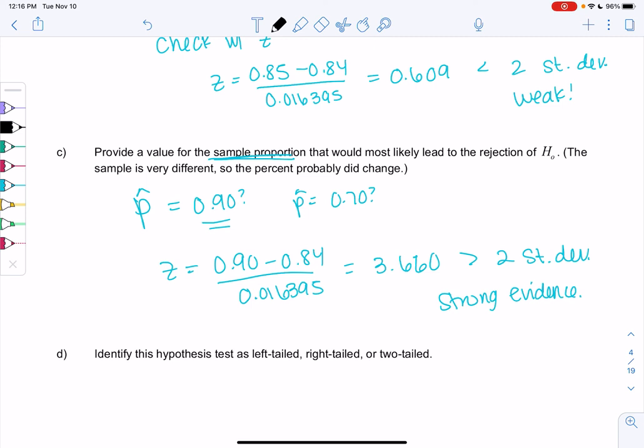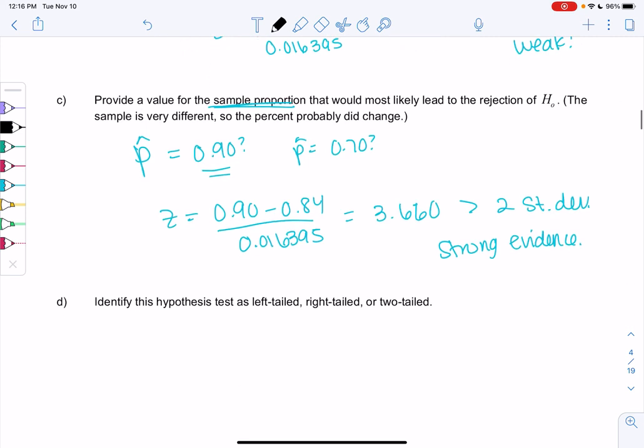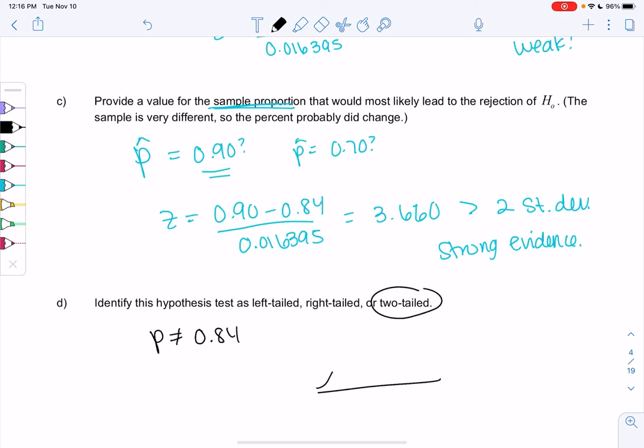So basically, we're trying to prove is something just random or is something very different. And again, we'll go to left-tailed, right-tailed, or two-tailed. So we were trying to prove that P was not equal to 0.84. So this is called two-tailed, which means when we draw the normal curve, we're going to look at the tails on both sides. So we'll check that out when we get into the later sections. But it's just preparing us for doing hypothesis tests. Thank you.